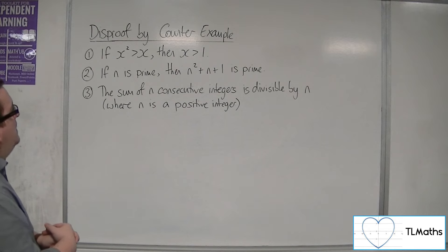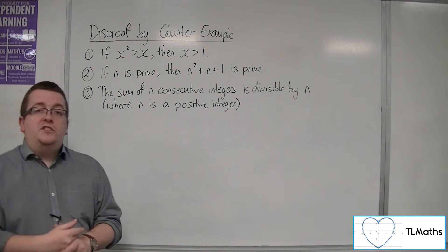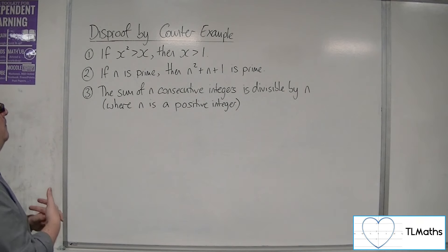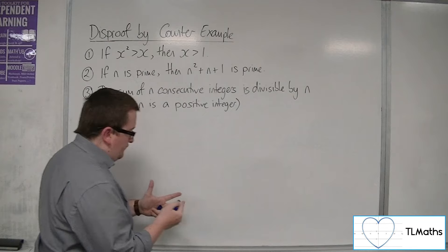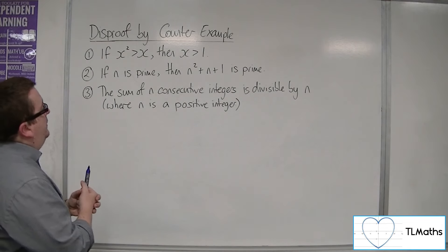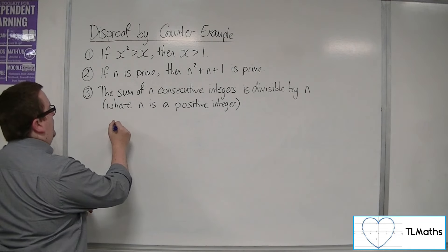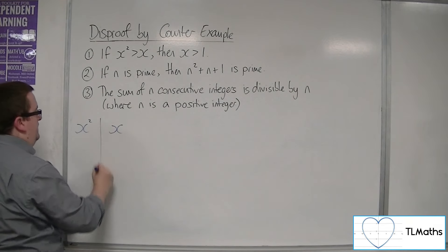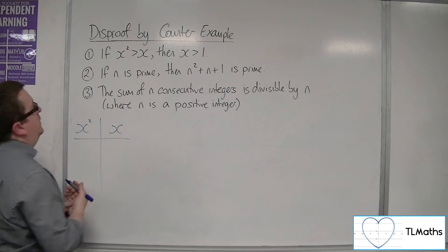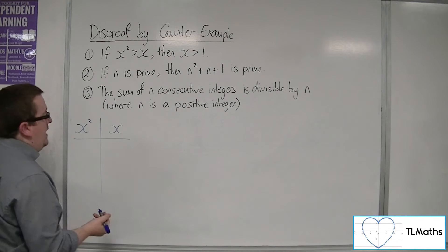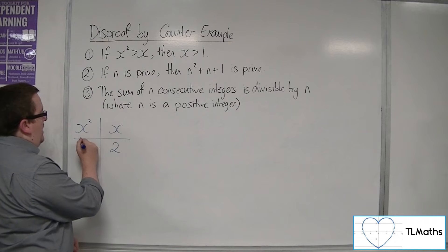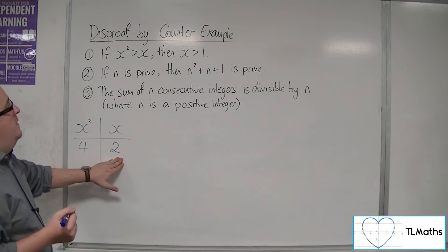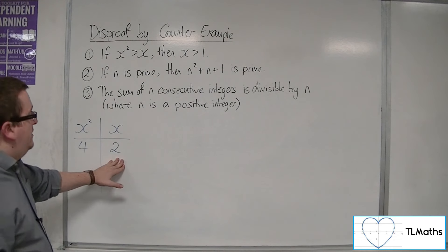So how about if we consider a few sample numbers? Let's think about this. If we try some x's and we try some x squareds, let's put them there. So if we try x is 2, then 2 squared is 4, and clearly x is greater than 1 here.